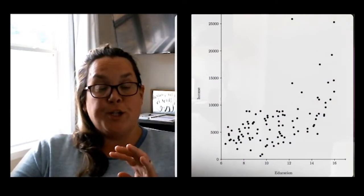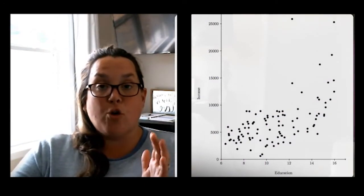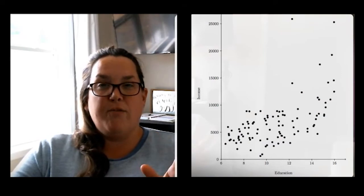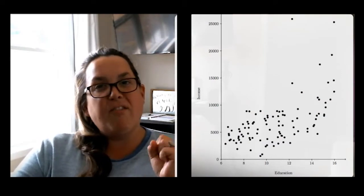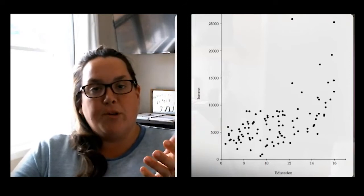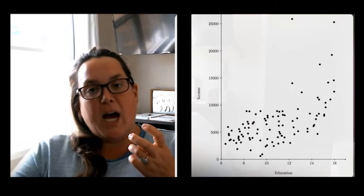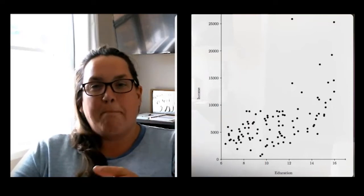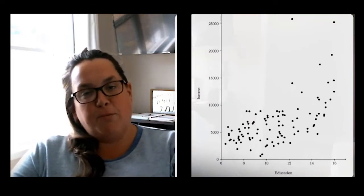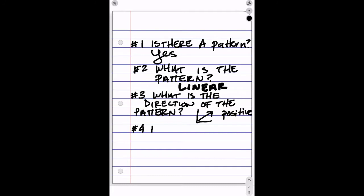So the fourth question is, how strong is the relationship? Well, if you look at these dots, they actually are fairly tight together. I've seen tighter relationships than this, but these dots are fairly tight around that kind of mental linear relationship that we're seeing. So I would say that this is a fairly strong relationship.